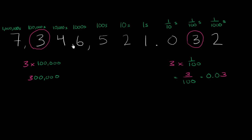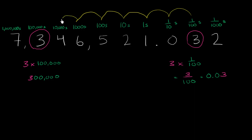Now let's answer our original question: how much larger is this 3 than that 3? One way to think about it is: how much would you have to multiply this 3 by to get to this 3 over here? We can look directly at place value. Every time we multiply by 10, that's equivalent to shifting one place to the left. So we would have to multiply by 10 seven times.